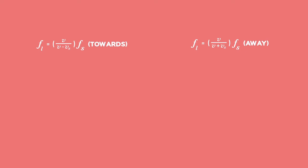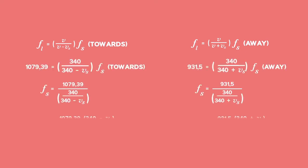We start by substituting the equation for both the approach and when the car has passed. The speed of sound in air, the frequency received, leaving only the frequency of the source and the speed of the source to be found. We've manipulated the two equations to equal the frequency of the source so that we can make them equal to each other.